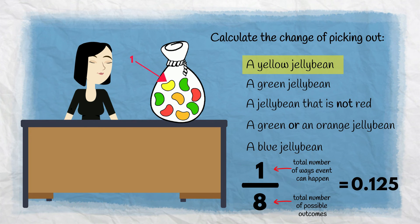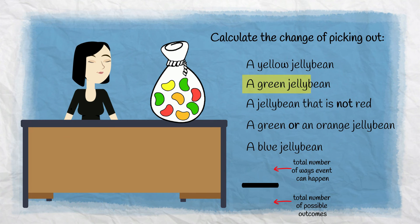The chance of picking a green is 3 in 8. Again, there are 8 possible outcomes. This time, however, there are three ways the event can happen, by choosing this one, this one, or this one. As a decimal, that is 0.375.